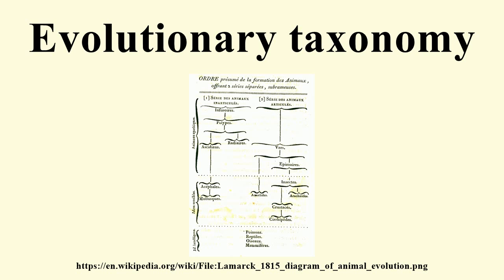In On the Origin of Species, the ancestor remained largely a hypothetical species. Darwin was primarily occupied with showing the principle, carefully refraining from speculating on relationships between living or fossil organisms and using theoretical examples only. In contrast, Chambers had proposed specific hypotheses — the evolution of placental mammals from marsupials, for example.